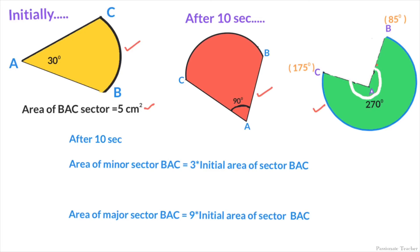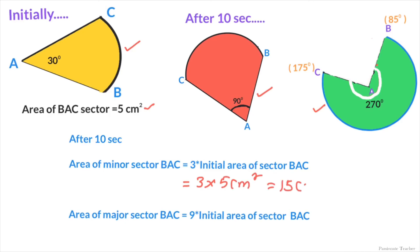After 10 seconds, the area of the minor sector BAC equals 3 times the initial area of sector BAC. This is because 90 degrees is exactly 3 times 30 degrees. So it equals 3 × 5 cm², which gives us 15 cm².